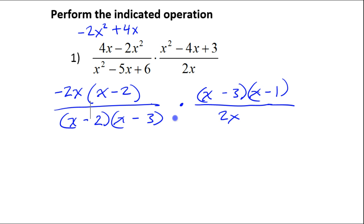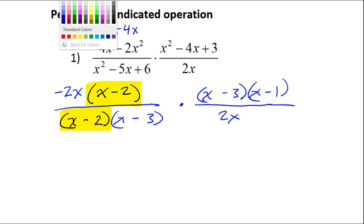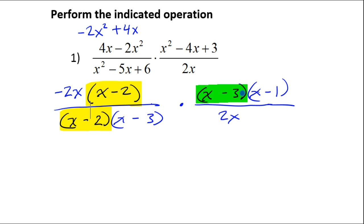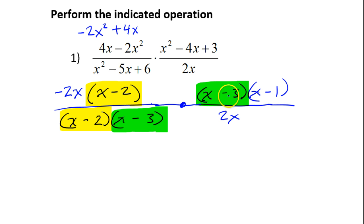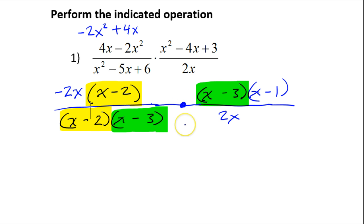Now let's look and see what will cancel out. I see x minus 2 in two places — those cancel. I also see x minus 3 in the numerator and x minus 3 in the denominator. Notice it doesn't matter that these are in different fractions — when you are multiplying, it's really like you have one big fraction. With multiplication, if you have a factor in a numerator and a factor in a denominator, you can cancel those out.